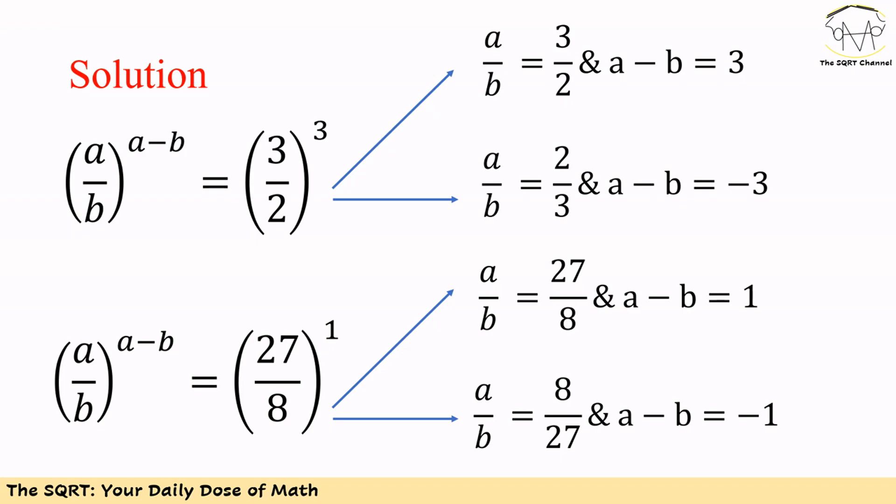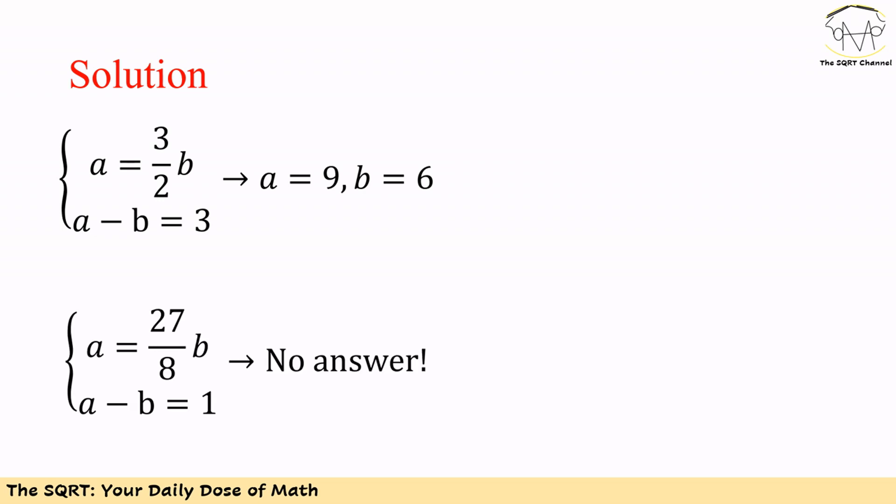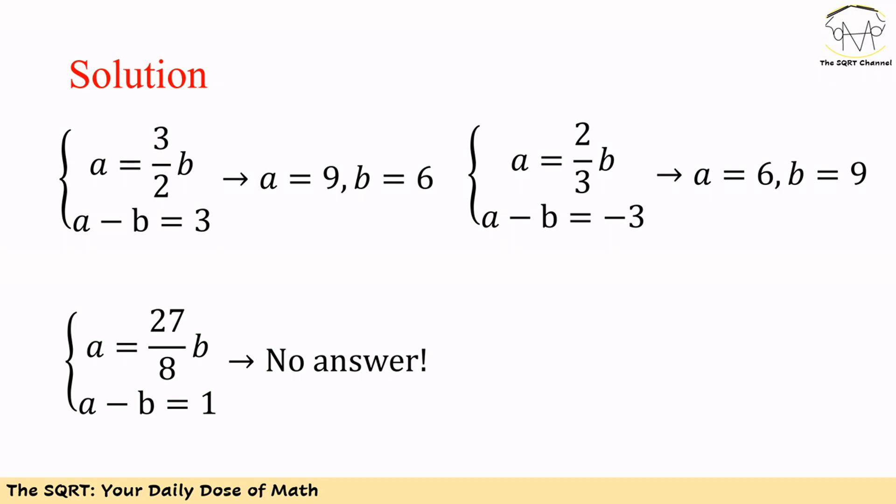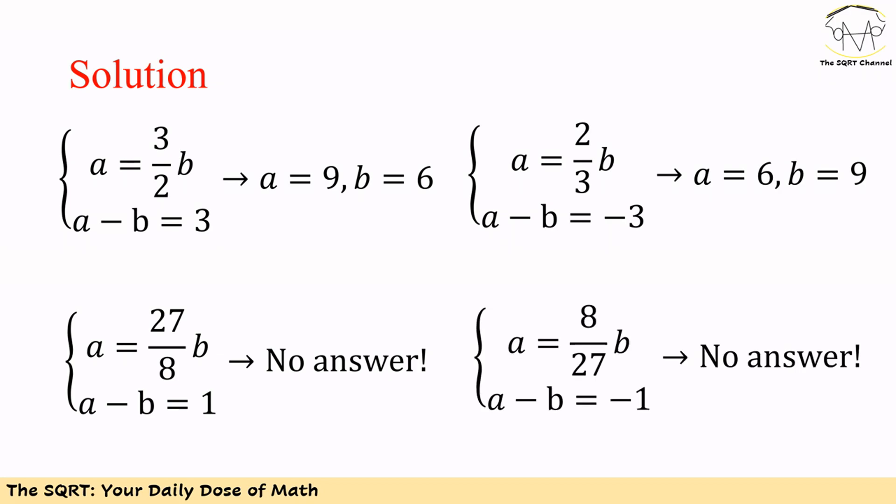For each case we need to simplify further. For the first sub-case, a = (3/2)b and a−b = 3, solving gives a = 9 and b = 6. For the second sub-case, a = (2/3)b and a−b = −3, giving a = 6 and b = 9. For the cases where a/b = 27/8 with a−b = 1, or a/b = 8/27 with a−b = −1, we cannot find any integer answers.